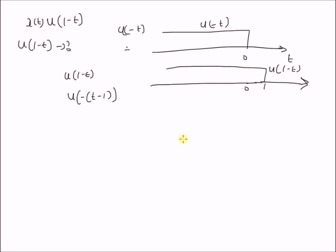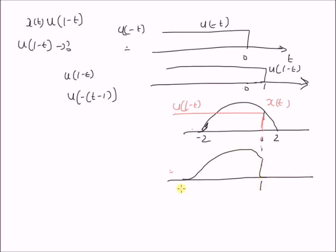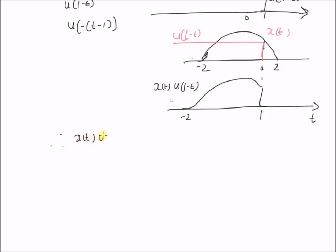When we multiply x of t — which is non-zero from minus 2 to plus 2 — with u of 1 minus t, the product equals the value of the signal up to t equals 1, and is 0 after t equals 1. Therefore x of t multiplied by u of 1 minus t equals x of t for t less than or equal to 1, and 0 for t greater than 1.